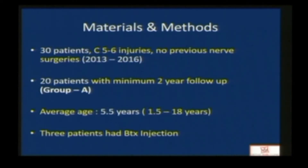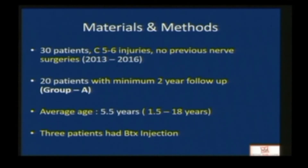To study this, we performed 30 patients so far, and included 20 patients with minimum two-year follow-up, termed as group A with average age of five and a half years. Four patients were cases of recurrence of internal rotation contracture after Botox injections.